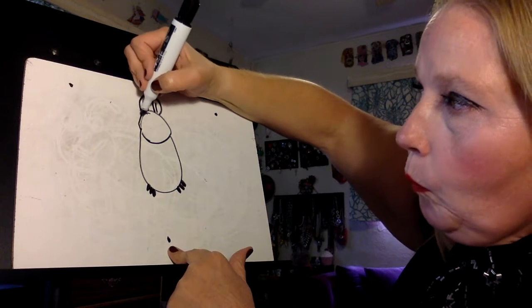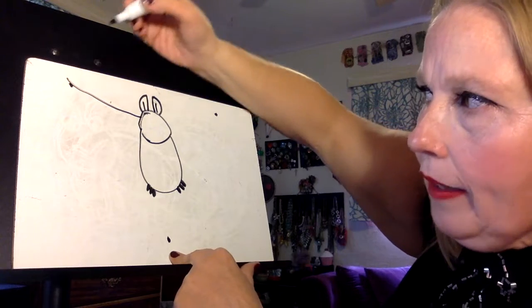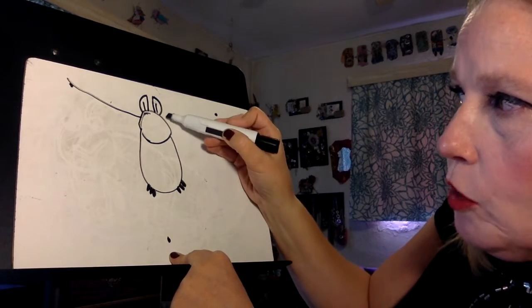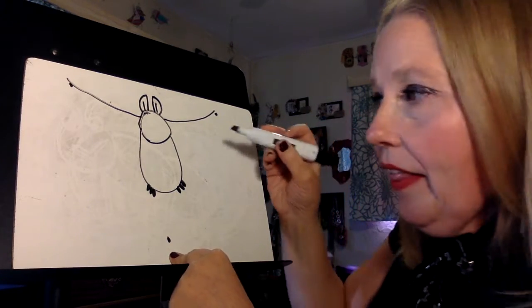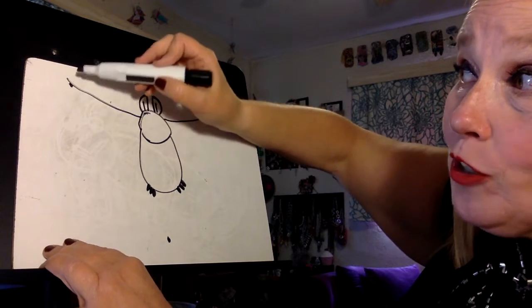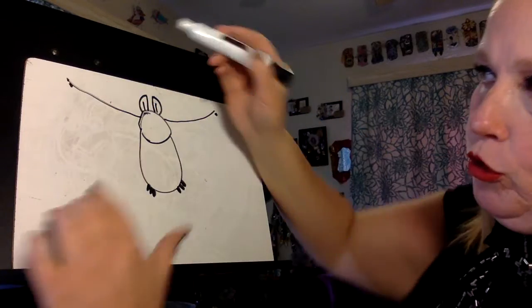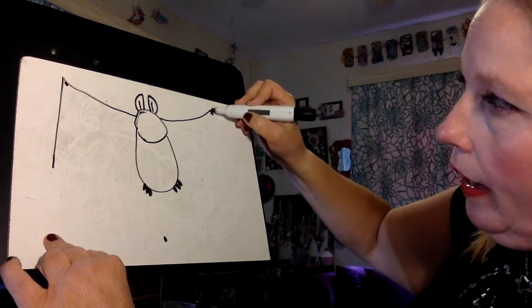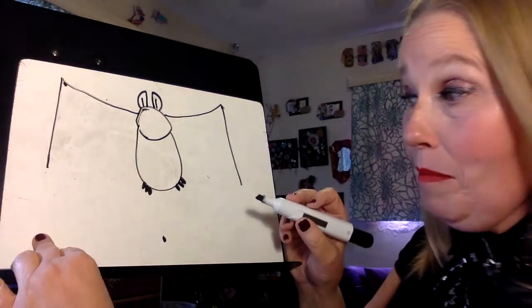So from here, we're going to start right below its ears and make a swooping line that comes up. We can do that on the other side together, just below the ear and a swooping line up to our dot. Then we're going to bring this line straight, almost straight down. We're almost making an upside down triangle. But here we're going to come straight down, straight down.